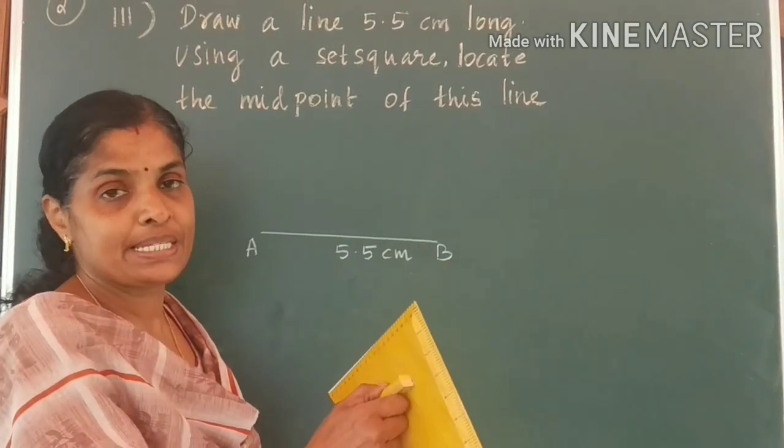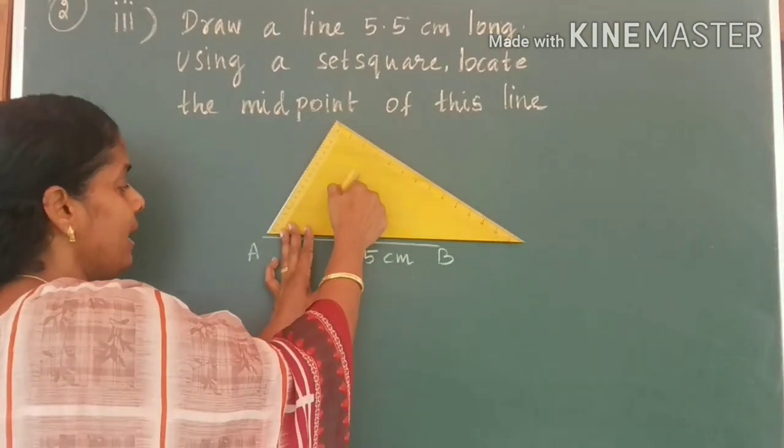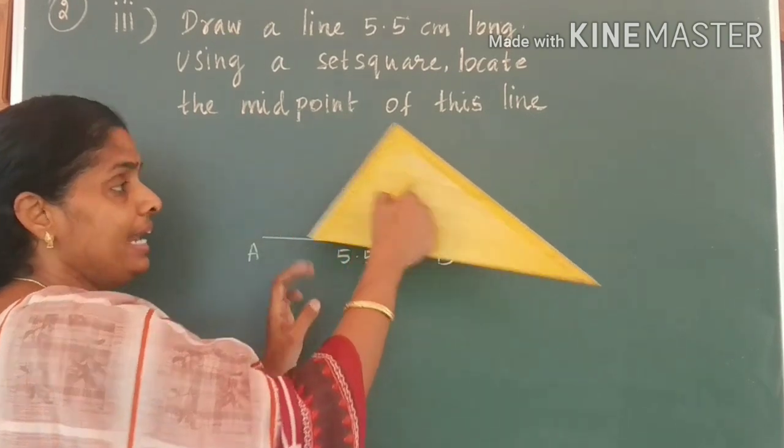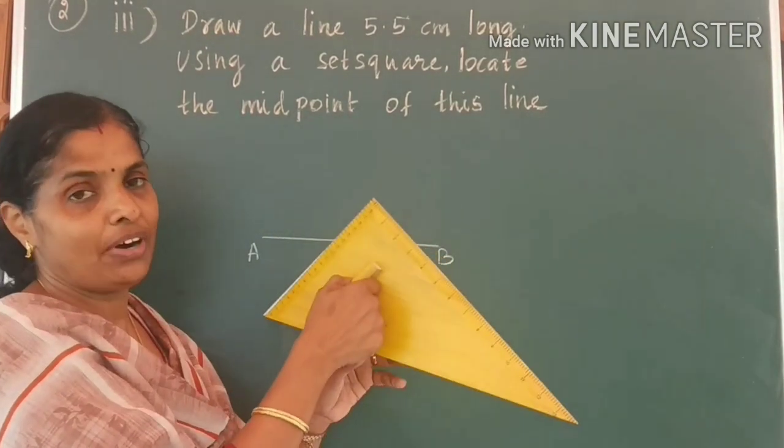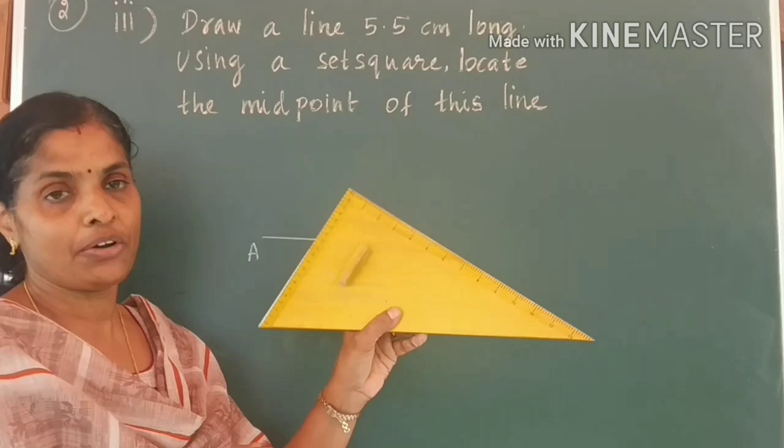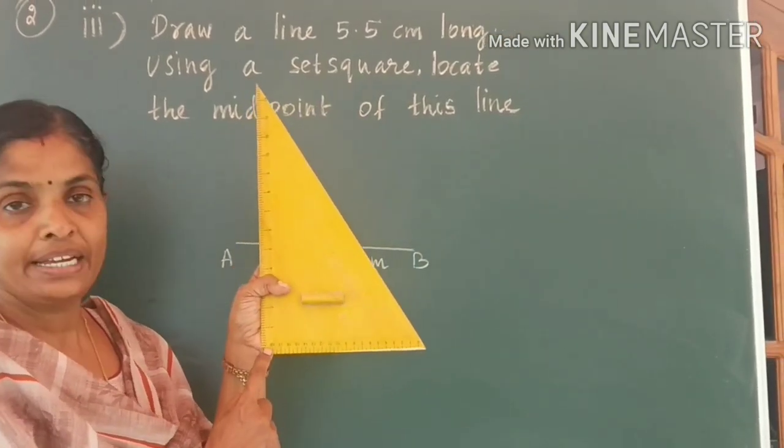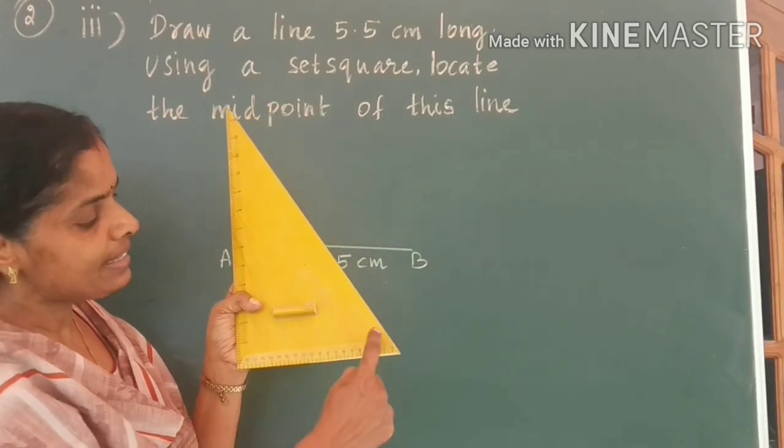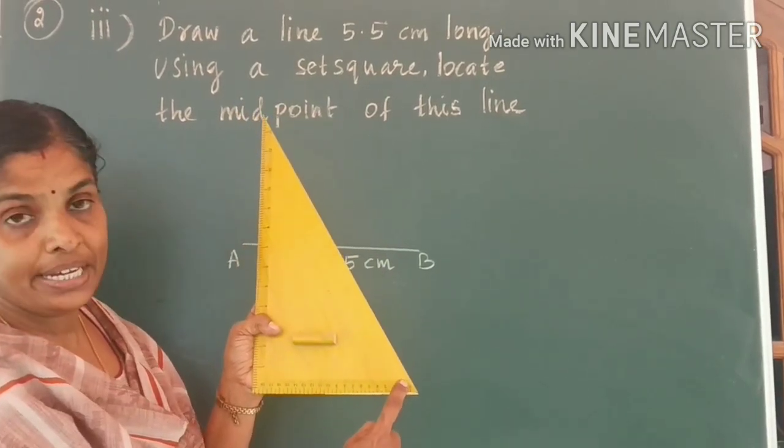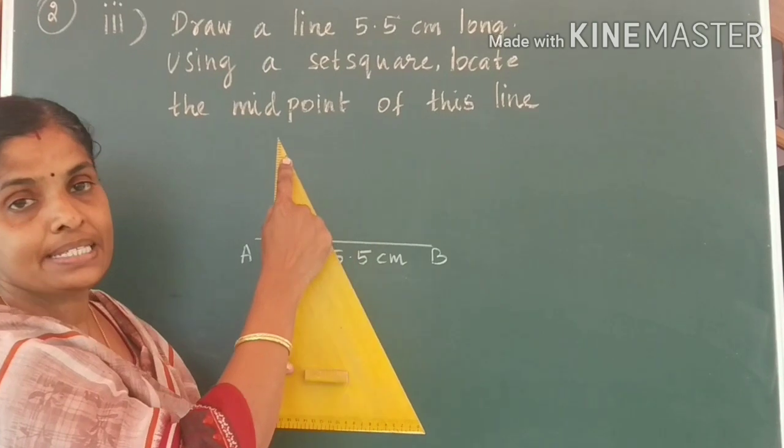Use your set square at the point A and draw an angle. First of all, I will tell you the angles of the set square. You know in this set square, this angle is 90 degree. And this angle is 60 degree. And this angle is 30 degree.